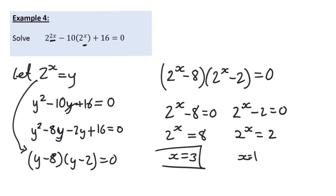And those are the answers for this example — that is how you do hidden quadratics. Basically, when there are two terms in an equation and the ratio of their powers is 2 to 1, you substitute to turn it into a quadratic equation, factorise, then substitute back in the original expressions to find the answer.